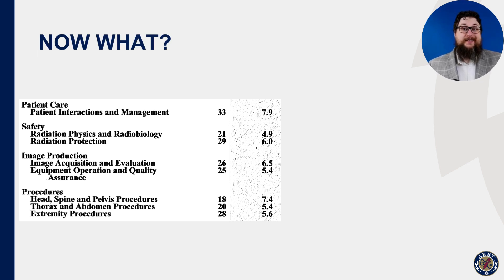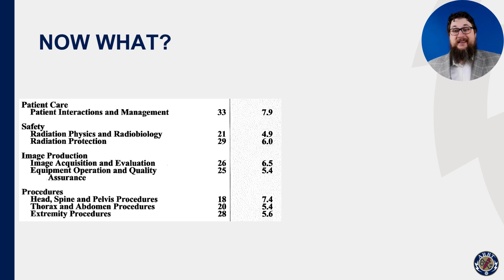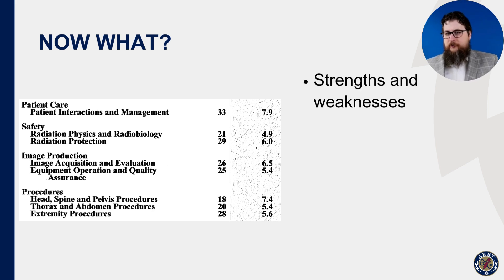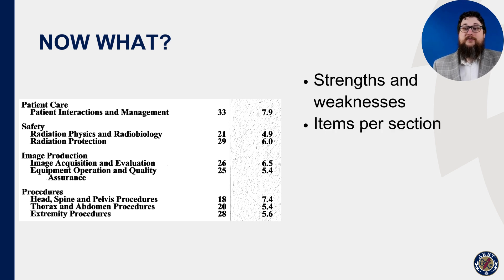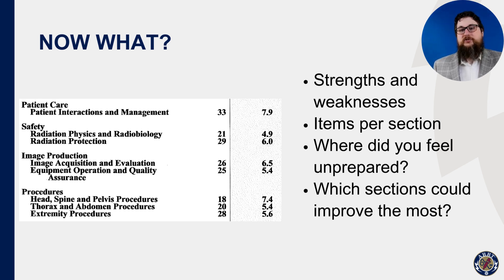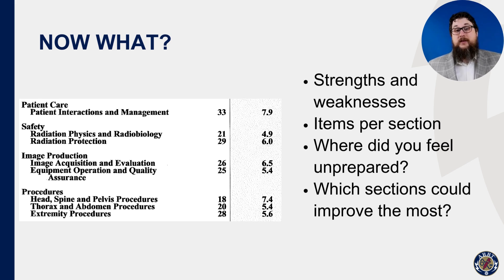So you have your exam score report — now what? Each candidate is unique, so ARRT can't provide specific recommendations to improve before the next attempt. We will always encourage candidates to review and study all of the content areas before their next attempt, but the score report does offer some data to help prioritize. First, use the section scaled scores to identify weaknesses — a lower score means more points are up for grabs, assuming you have the same number of items. Similarly, consider the number of items per section, because more items means more wrong answers that you can flip next time around. Finally, think about which sections are most likely to improve, since candidates have unique strengths and weaknesses and will need to put more effort into some categories than others.